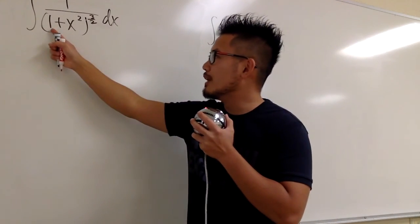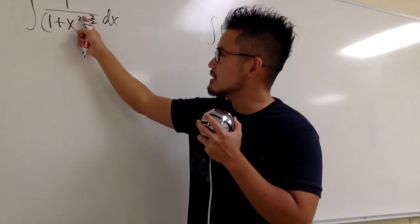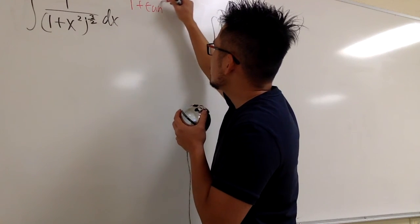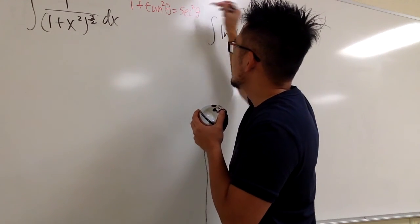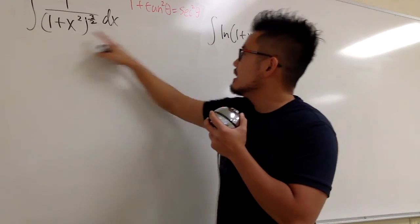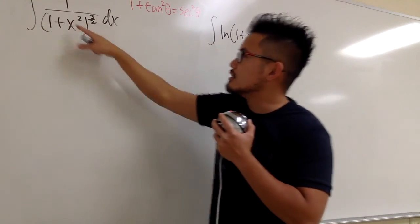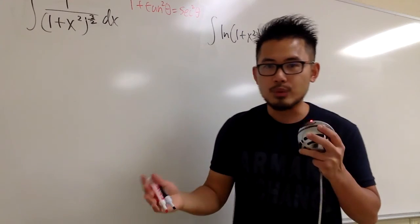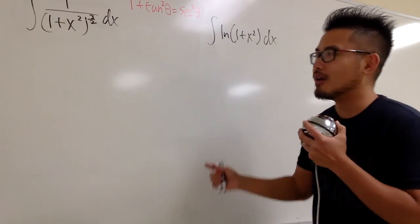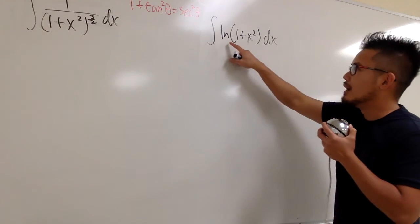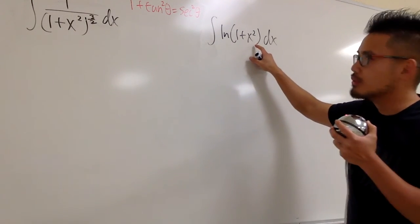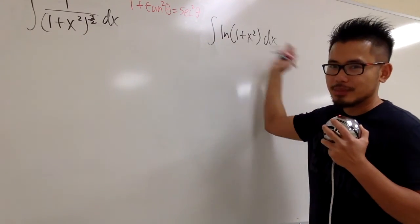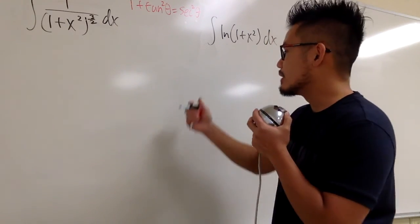The thing we know is that we have two terms inside, and we know the identity that 1 plus tangent squared theta gives us secant squared theta. If I let x equal to tangent theta, then the inside is going to be secant squared theta, and secant squared theta raised to the 3 over 2 power will work out nicely. However, I'm not going to use this approach with ln of 1 plus x squared — I do not want to put a trig function inside of a ln. That's really bad. Let's focus on the first integral.